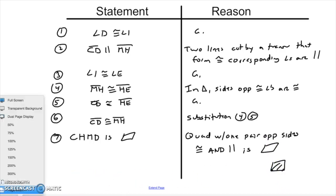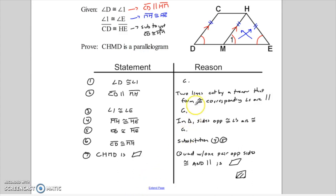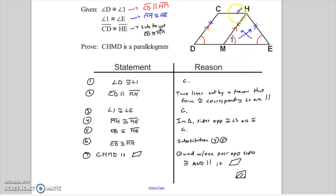So there's my first proof. We started with a quadrilateral and wanted to prove it was a parallelogram. A pair of corresponding angles gave us the parallel lines. By using the triangle and the two congruent angles, we got a pair of congruent sides. That let us do a substitution to get the two sides congruent. Now we've got a pair of sides that is parallel and congruent — and that's all we need to prove CHMD is a parallelogram.